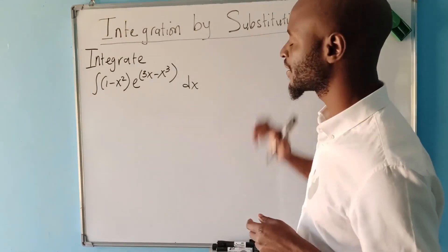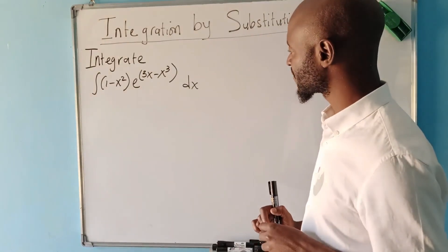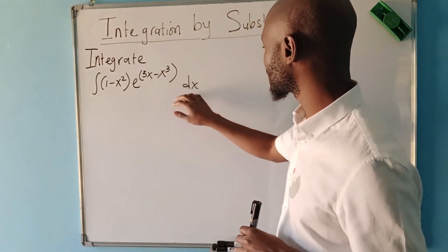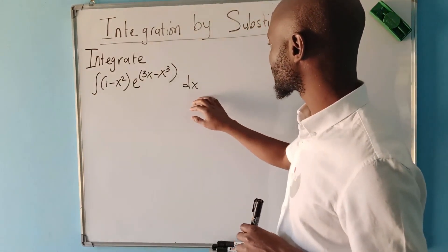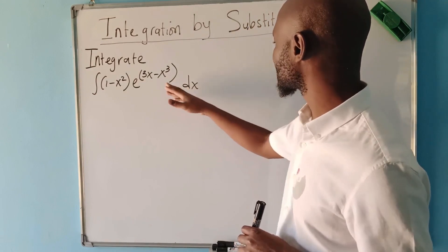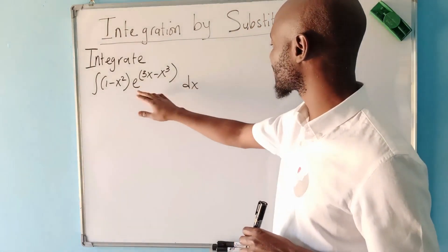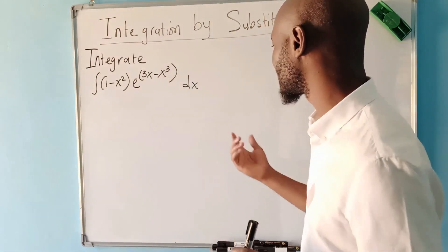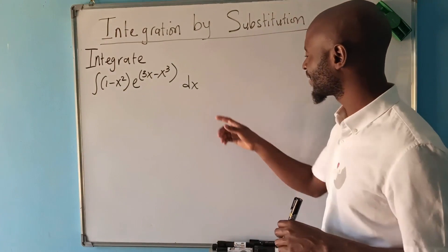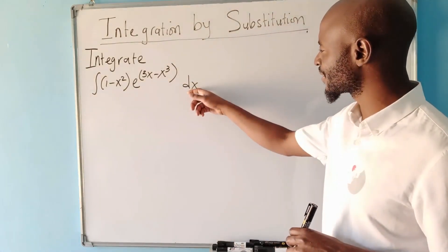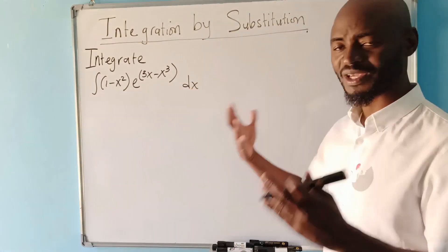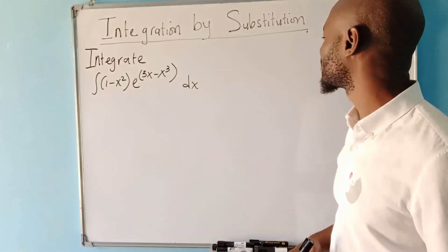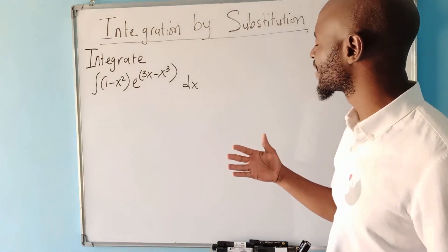Sometimes you hear them say use substitution. So we are integrating the given function here, but we want to integrate by substituting something instead of having x. We change to some other variable. Here we are integrating with respect to x, but we can change it so that we can have another variable — maybe it will be easier for us to integrate.